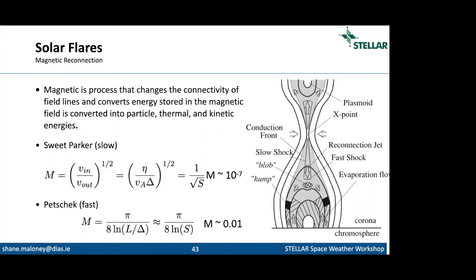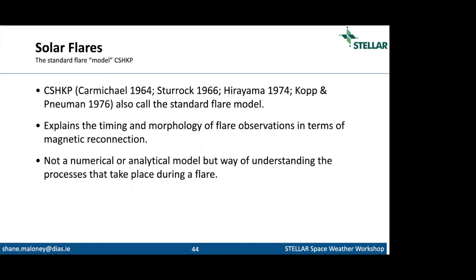This leads into what I was saying: if we have a reconnection region, we expect outflow jets and fast-mode shocks at the ends plus slow-mode shocks at the sides. This is really interesting because we can go look at flare observations and see if we find evidence for these structures. What does that tell us about what's happening in the reconnection region? This leads me nicely into the standard flare model.